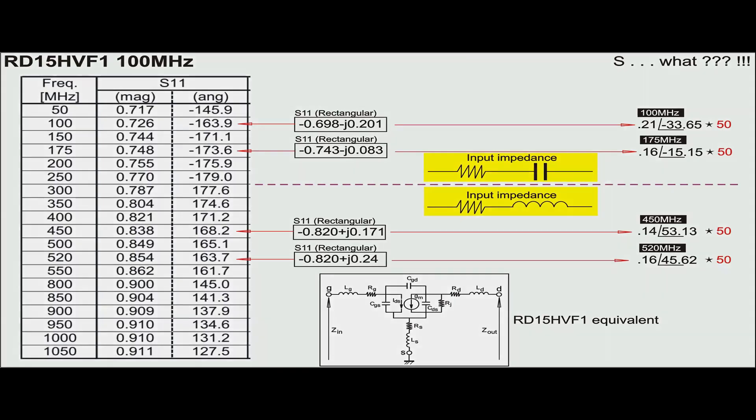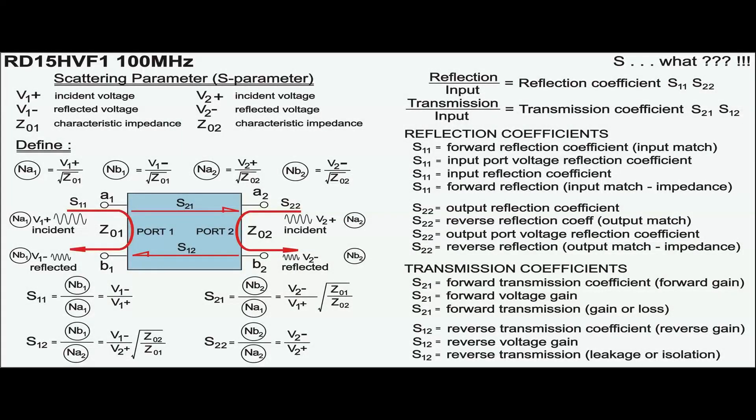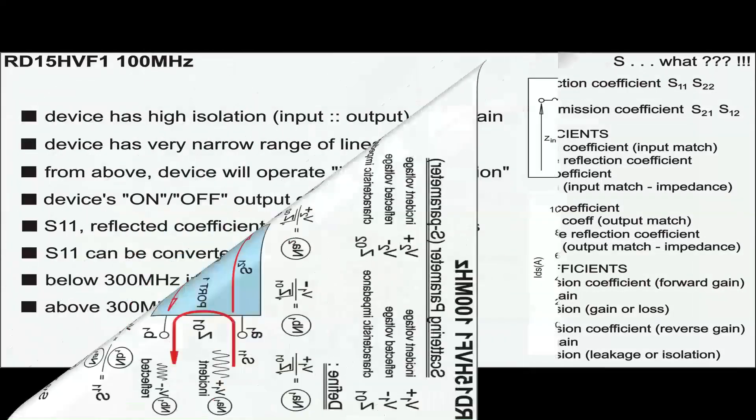The S-parameter is specific to a device with one port, two ports, three ports, etc. This slide shows characteristics of a two-port device with all kinds of different names for scattering parameters beyond the scope of this video clip.